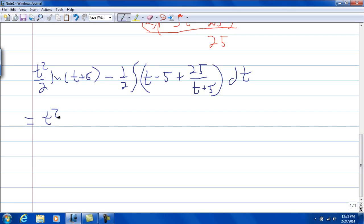So t squared over 2, minus 5t plus, and 25 is just a coefficient, so the integral of 1 over t plus 5.